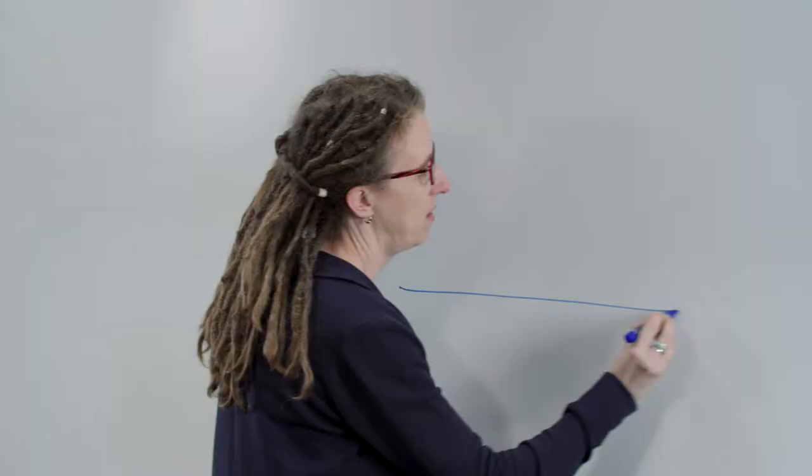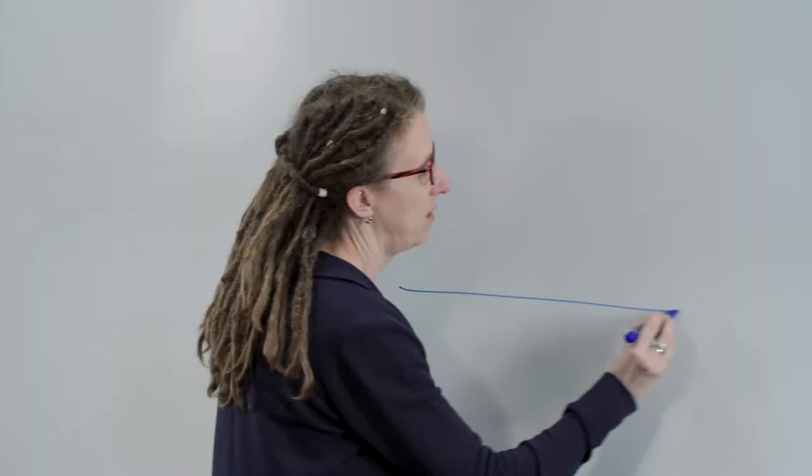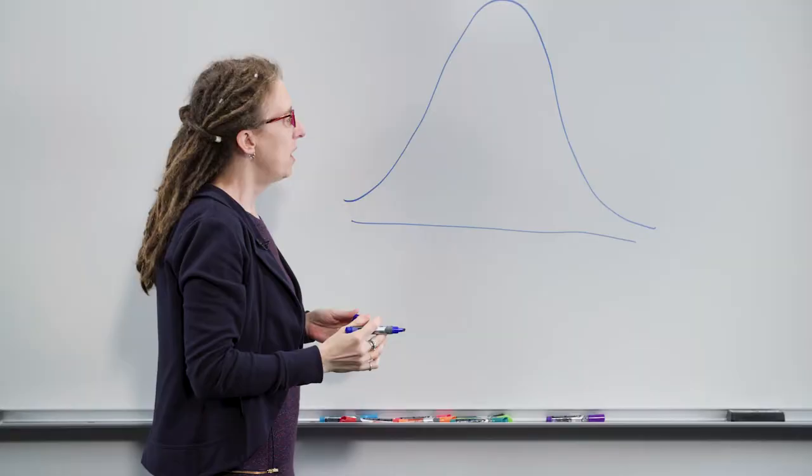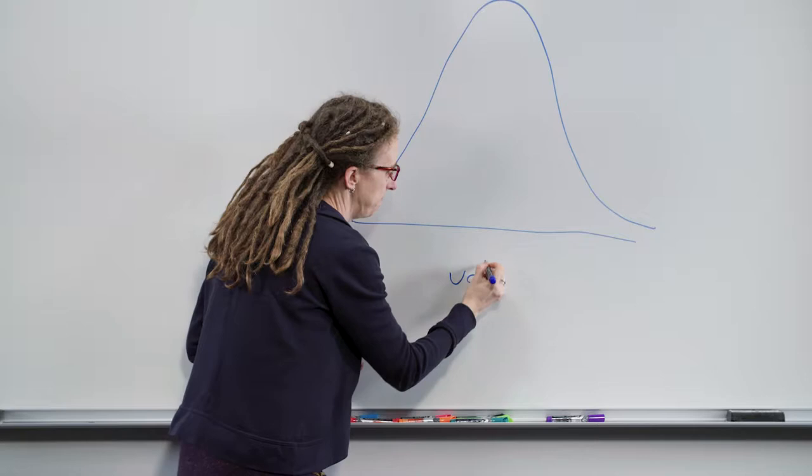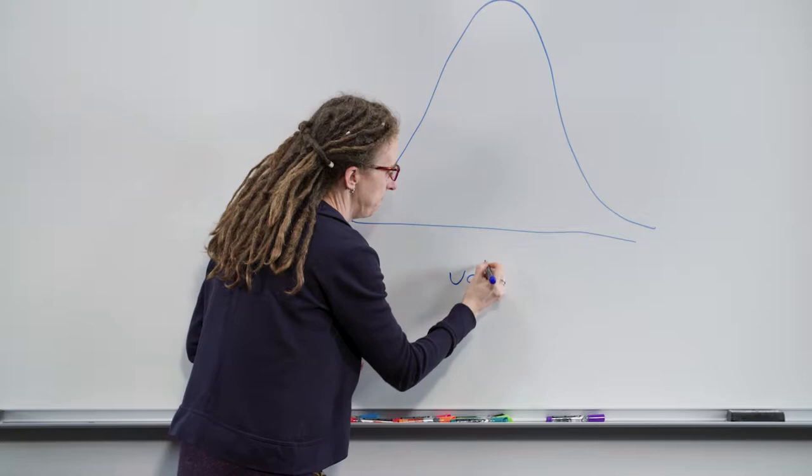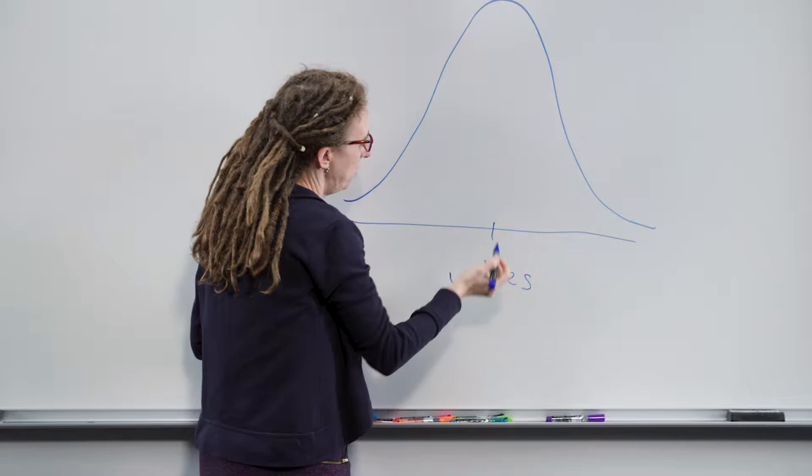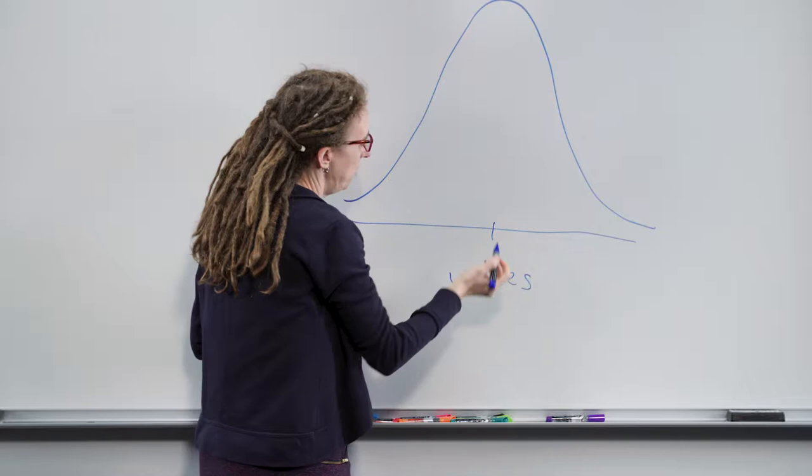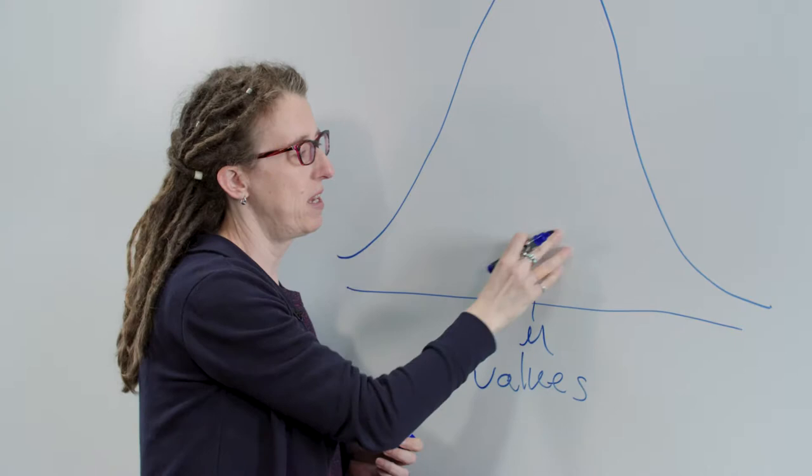So thinking about continuous data, a lot of the data in experimental biology follows a normal or bell curve-shaped distribution. And by that, I mean that if these are the values that you can observe, there is some typical value that we denote with the Greek letter μ or the mean that is often observed.